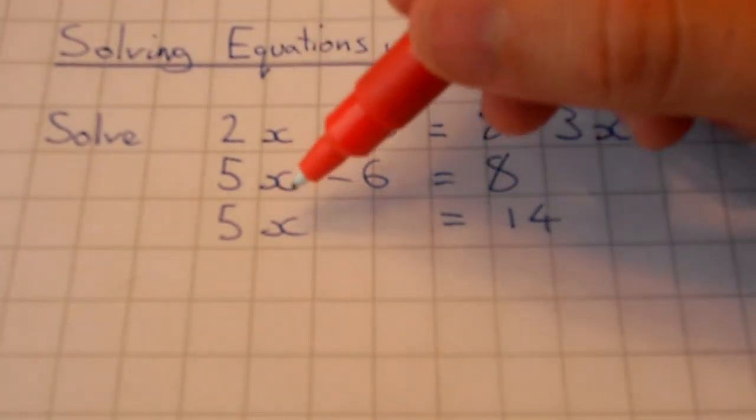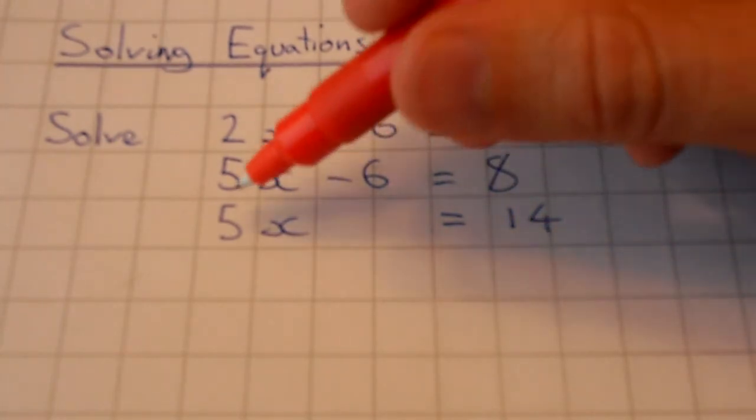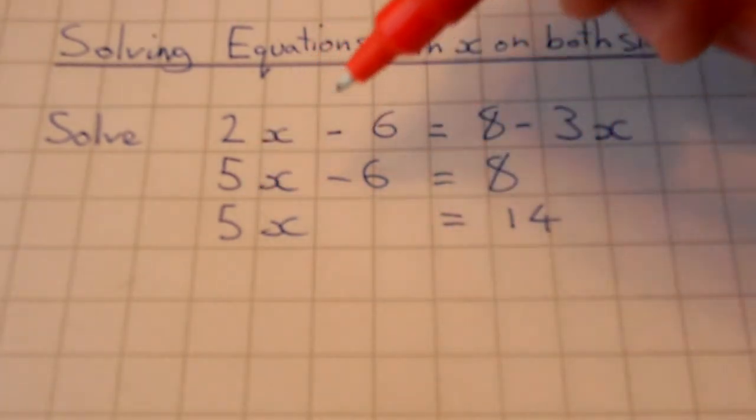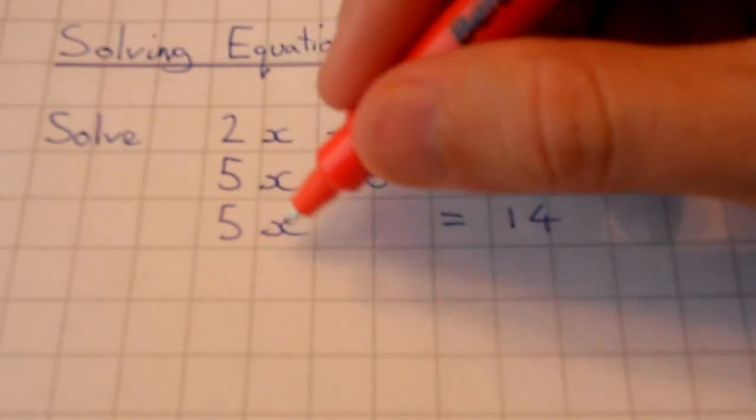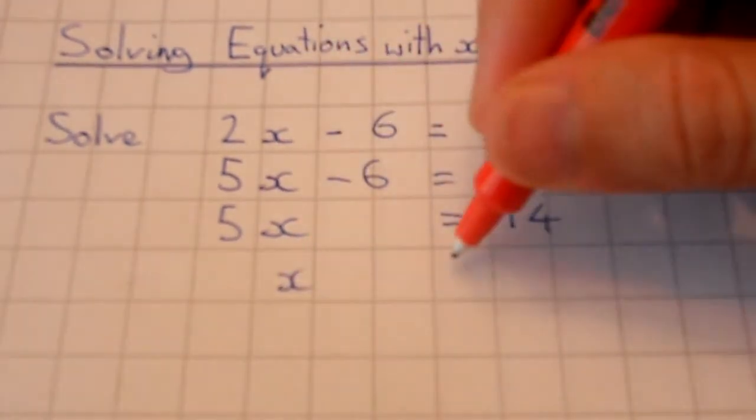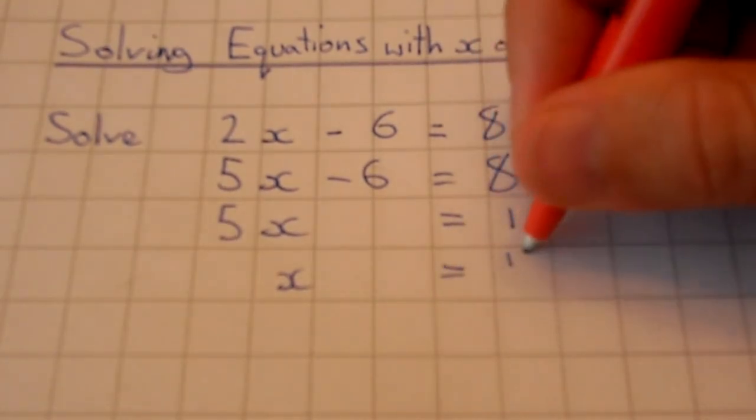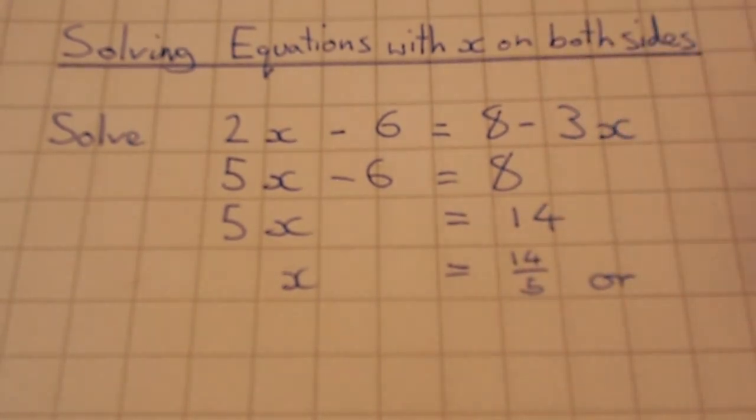I haven't got x on its own, so what I need to do is get x on its own by dividing by what's in front of the x. What's in front of the x is a 5, so if I divide both sides by 5, I'll get 5x divided by 5 gives me x. 14 divided by 5 just gives me 14 over 5, or if you are a person who works in decimals, that will be 2.8.